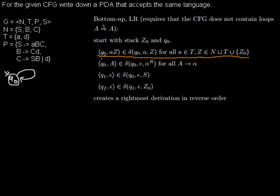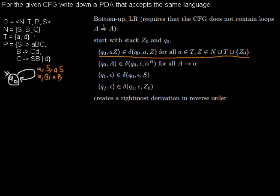Let's start with 'a': I want a transition where I read 'a' from the input string, read 's' from the stack, and push 'a' and 's' back. I want the same for 'b', for 'c', and for the terminals as well — so I read 'a', read 'a' from the stack, and push back two 'a's. The same for 'd', and also the same for the bottom symbol.